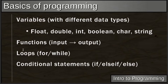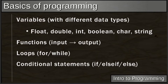Conditional statements are like ultimatums. For example: if the sky is blue, do something. Else if the sky is red, do something else. Else — if all the above conditions are false — do a default action. These are the fundamental building blocks you'll need to know across all programming languages: variables, functions, loops, and conditionals.